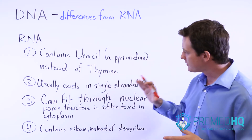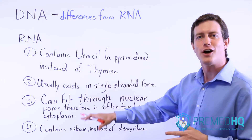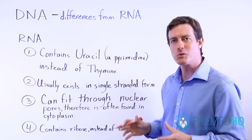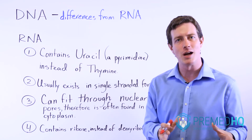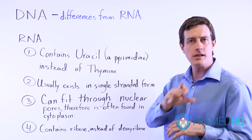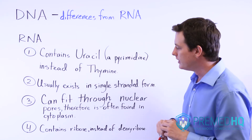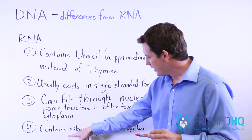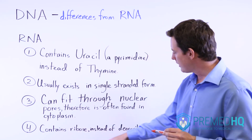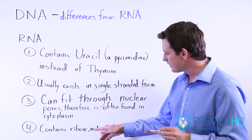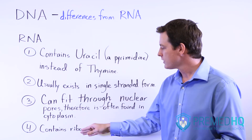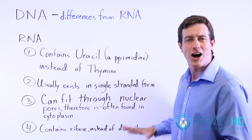Lastly, something so fundamental that I actually forgot and put it last on the list: RNA is ribonucleic acid, whereas DNA is deoxyribonucleic acid. What that means is that the sugar forming part of the nucleotide in RNA is ribose — the pentose sugar it uses is ribose instead of deoxyribose. The difference between these is that there is an OH group on carbon two of the ribose, whereas deoxyribose does not have that.